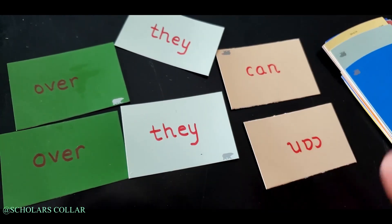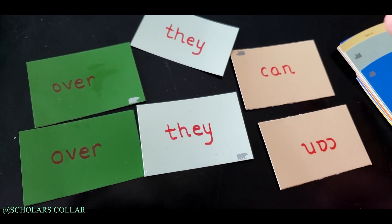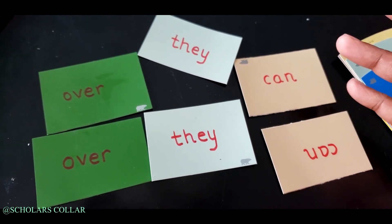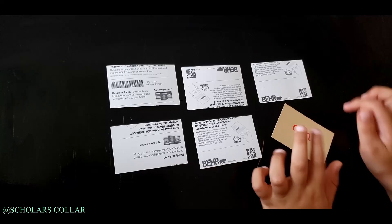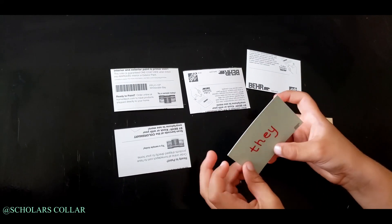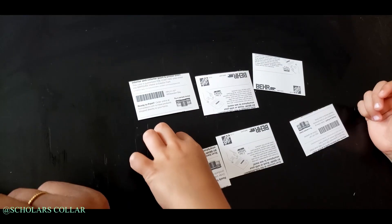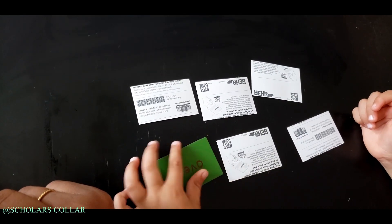In this example, I've only used three words because he is used to 'can,' but 'over' and 'they' are something new to him. Can you find 'can'? What is that? 'They.' Okay, turn both back. 'Over.'